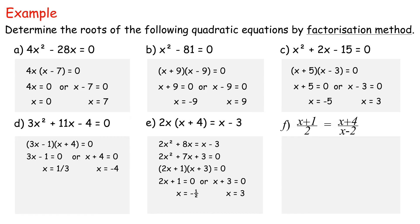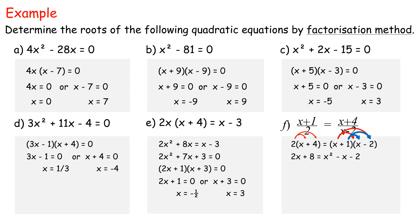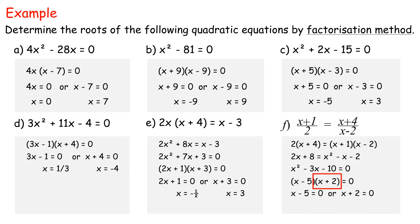In example f, which deals with proportions: (x plus 1) divided by 2 equals (x plus 4) divided by (x minus 2). Do the cross multiplication, followed by converting the equation into ax² plus bx plus c equals 0. 2(x plus 4) equals (x plus 1)(x minus 2). 2x plus 8 equals x² minus x minus 2. x² minus 3x minus 10 equals 0. (x minus 5)(x plus 2) equals 0. x equals 5 or x equals negative 2. Therefore, the roots are 5 and negative 2.